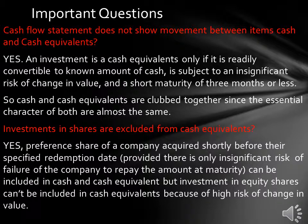Cash flow statement does not show movement between items of cash and cash equivalents. An investment is a cash equivalent only if it is readily convertible to a known amount of cash, is subject to an insignificant risk of change in value, and has a short maturity of three months or less. Cash and cash equivalents are clubbed together since the essential character of both are almost the same. Investments in shares are excluded from cash equivalents. Preference shares of a company acquired shortly before their specified redemption date, provided there is only insignificant risk of failure of the company to repay at maturity, can be included in cash equivalents. However, investment in equity shares cannot be included because of high risk of change in value.